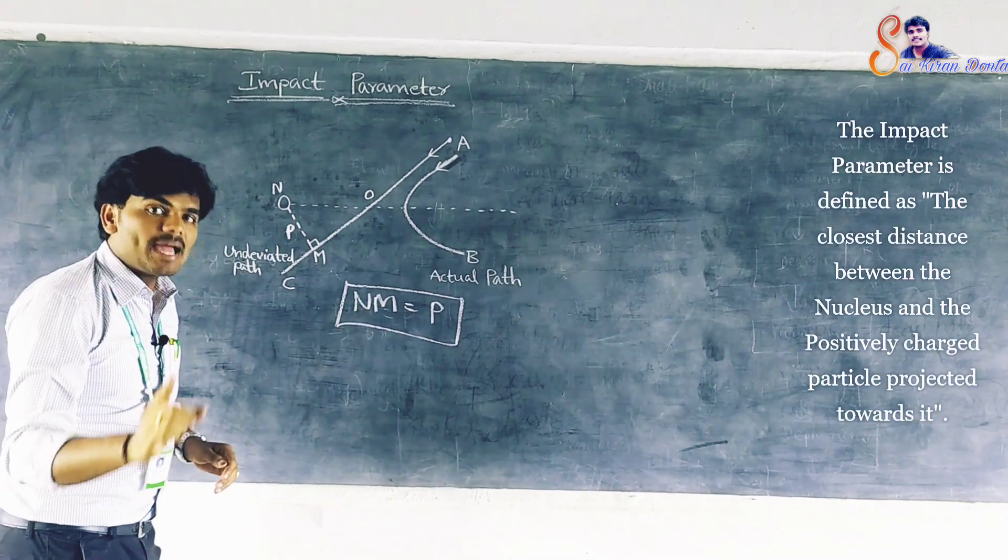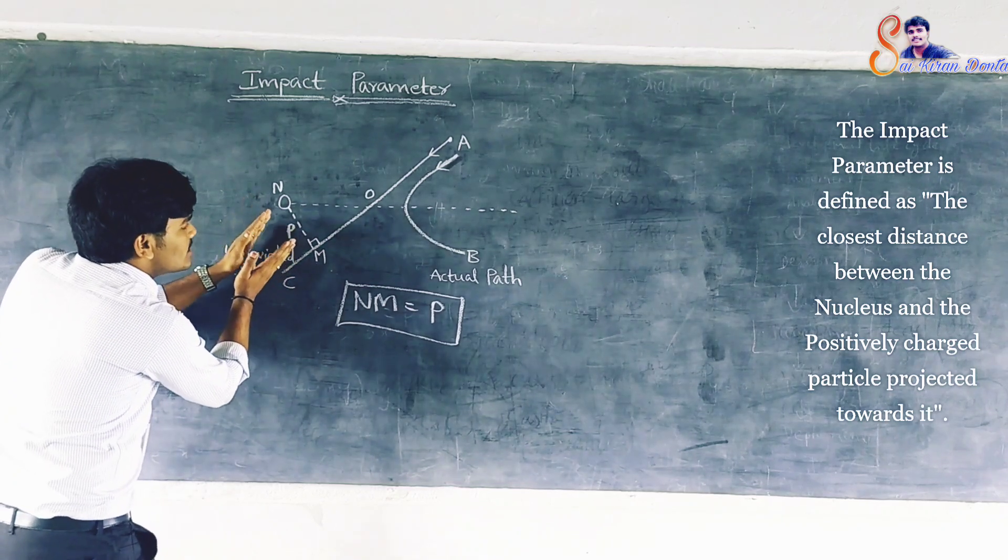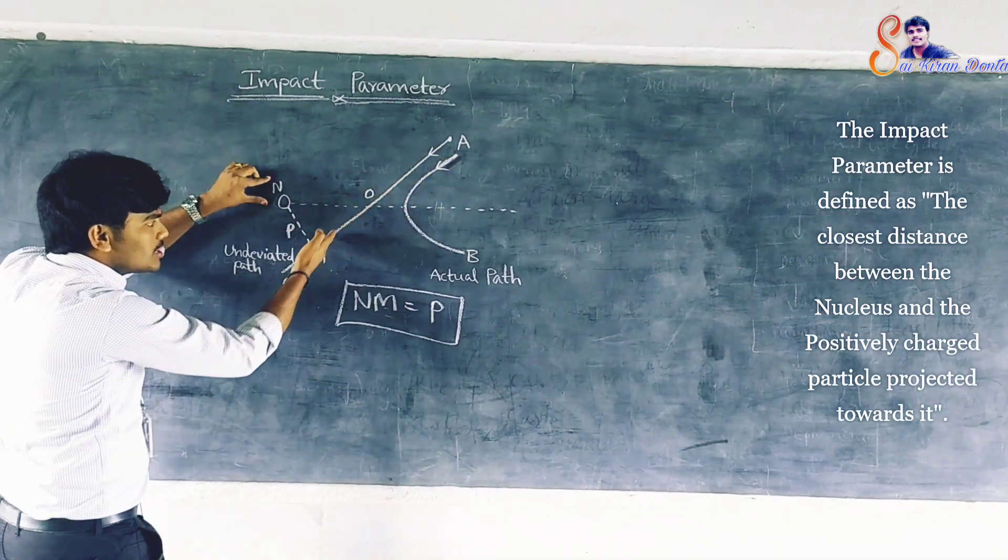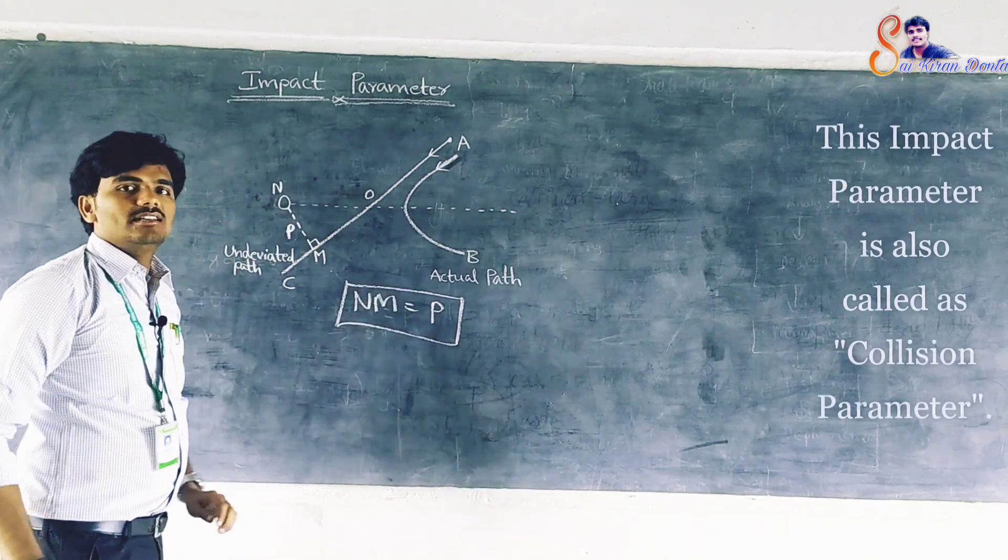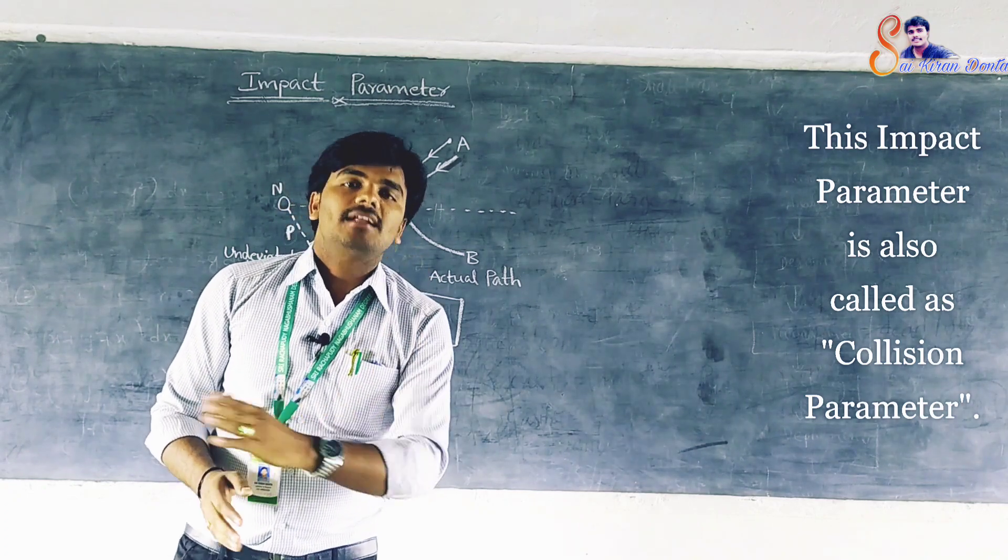Thus, the impact parameter is defined as the closest distance between the nucleus and the positively charged particle projected towards it. This impact parameter is also called collision parameter.